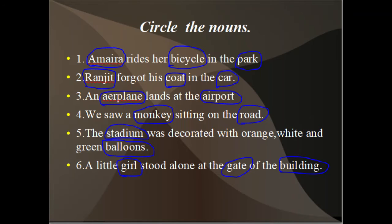Sentence two: Ranjith forgot his coat in the car. Ranjith is a person, coat is a thing, and car is a thing. So in this sentence, Ranjith, coat, and car are nouns.